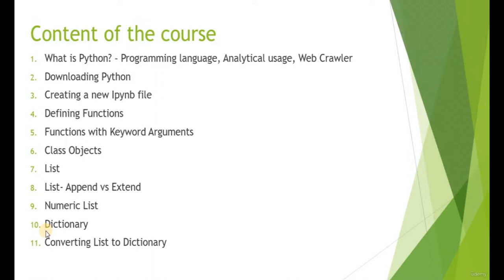A dictionary consists of pairs of keys and values. We bind information into a number of keys and values, so that when we look up into the dictionary, we can search for the key to get our required values. Without wasting any more time, let's get straight into what Python is.